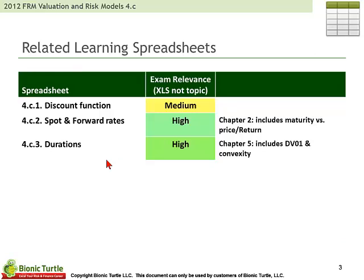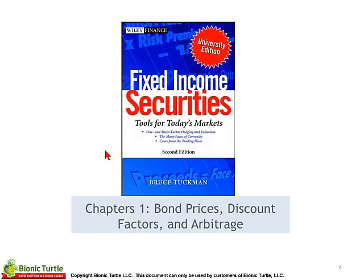Regarding the learning spreadsheets, I've consolidated from five last year down to three learning spreadsheets: 4C1, 2, and 3. 4C1 illustrates the discount function and a couple of applications — it's a workbook but only of median relevance. 4C2 and 4C3 are both tagged as highly relevant; these are really core building blocks for the Fixed Income Securities asset class. 4C2 covers illustrations with the spot and forward rate curves, very central to the bond asset class. And 4C3 covers duration — a workbook with several sheets. Duration is the key single-factor sensitivity we use for bonds and Fixed Income instruments, so those are very foundational to the FRM.